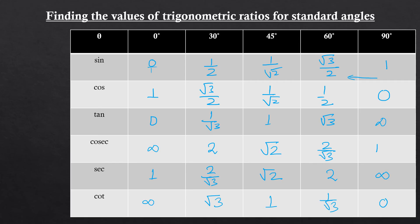If you practice this two or three times, you will be able to complete the whole table in one to two minutes. To recap: step one — write 0, 1, 2, 3, 4; step two — divide all by 4; step three — take the square root. You get 0, 1/2, 1/√2, √3/2, and 1 for sine.